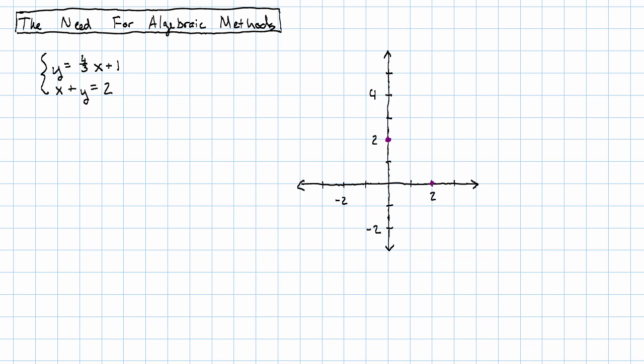As its x and y intercepts both at two, y equals four-thirds x plus one has y intercept one and slope over three up four.